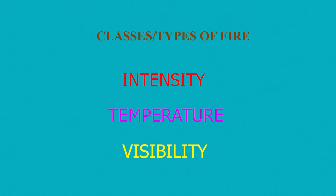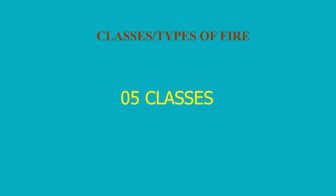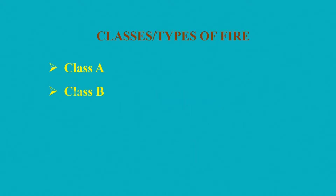Fires can be classified in five different classes: Class A, B, C, D and K. Now we explain each type of fire along with the fire extinguishers used for each type.